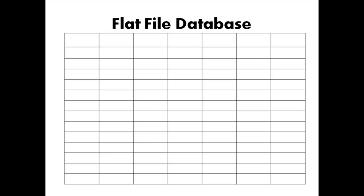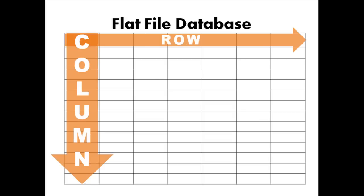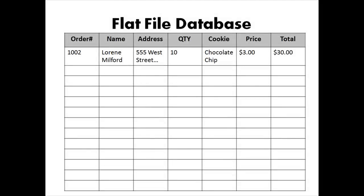To understand why we need relationships, we're going to first need to know about a particular kind of database known as the flat file database. A flat file database is like a spreadsheet where you have data stored inside a bunch of rows and columns where related information lines up in those planes. To give you an example, let's say we'd like to track orders for our cookie company.